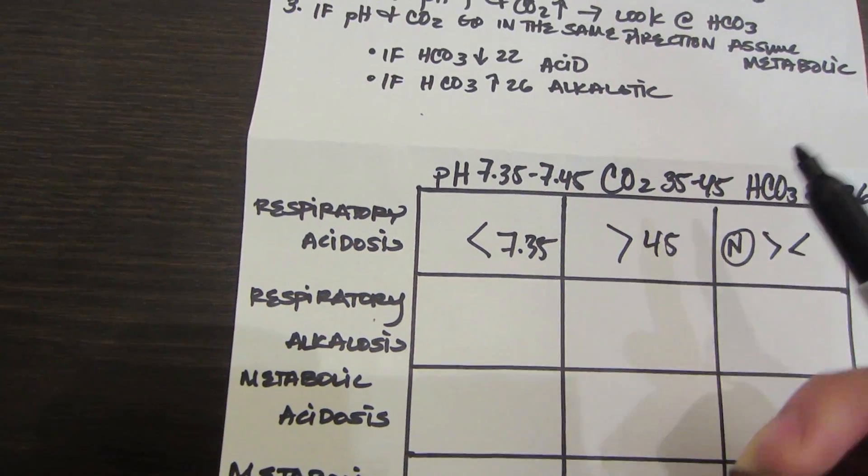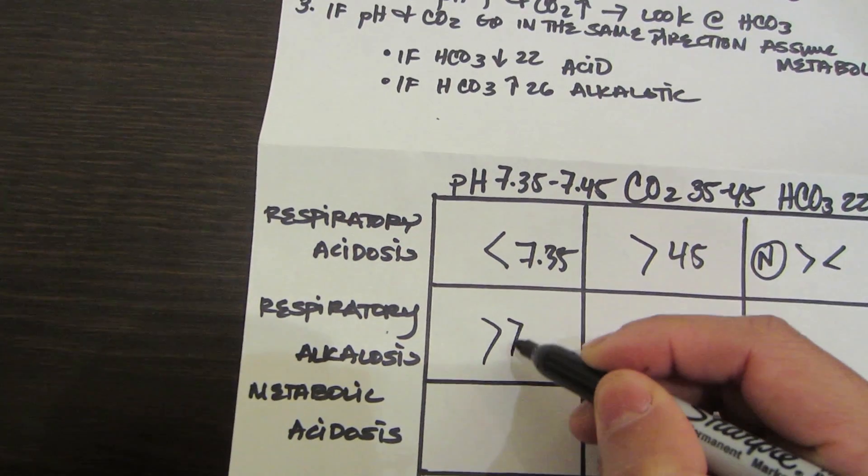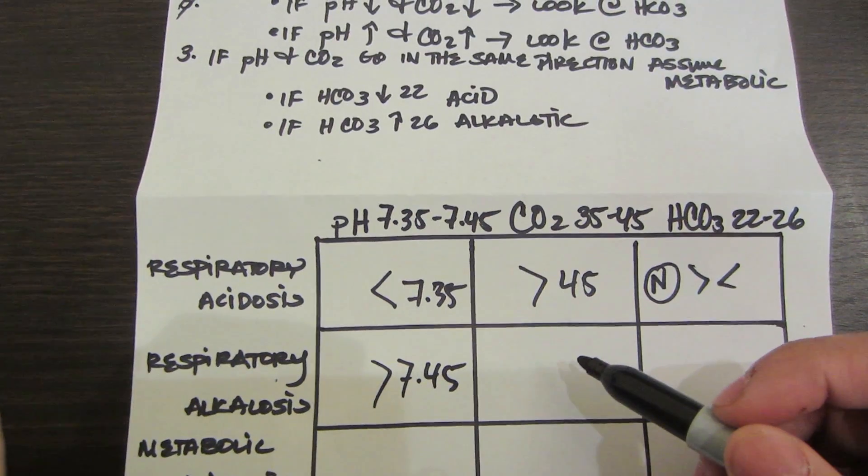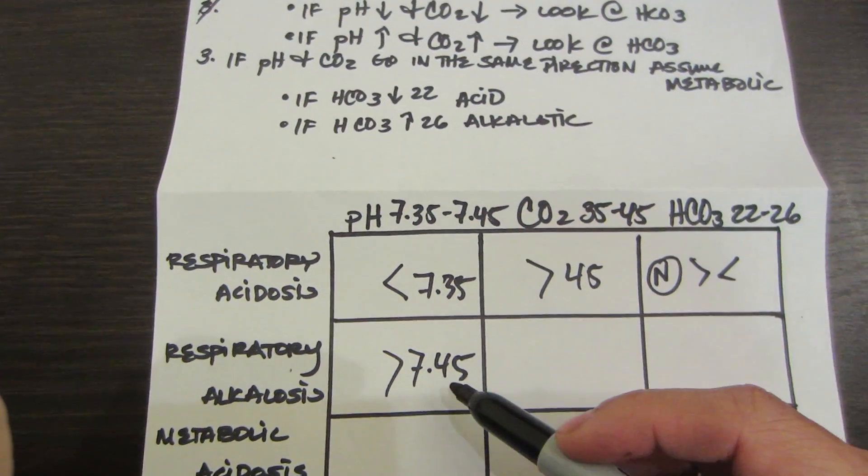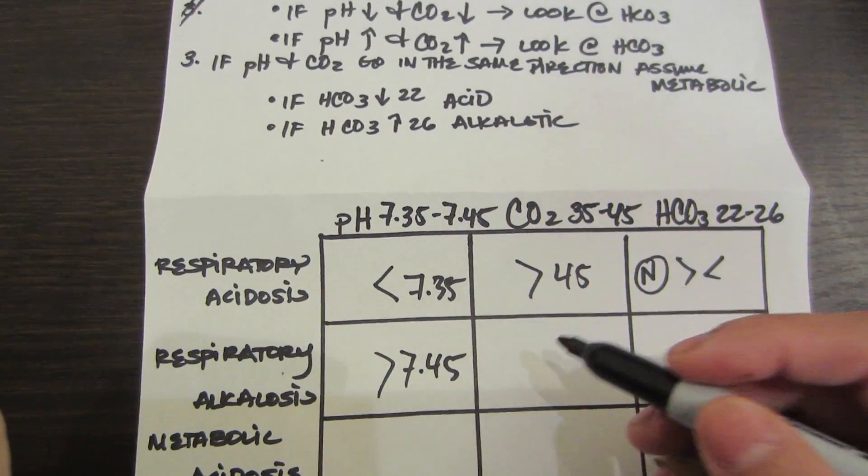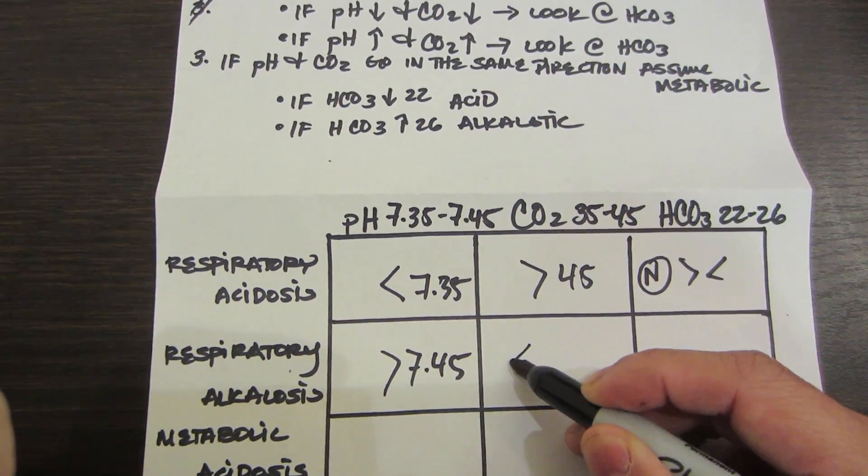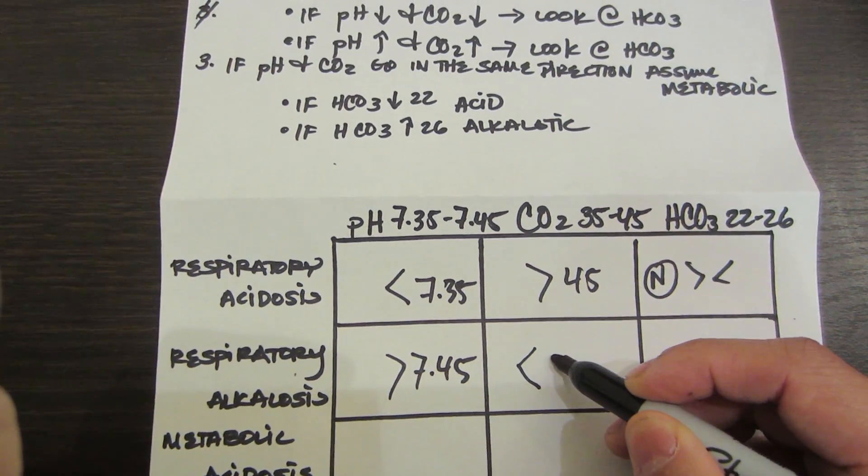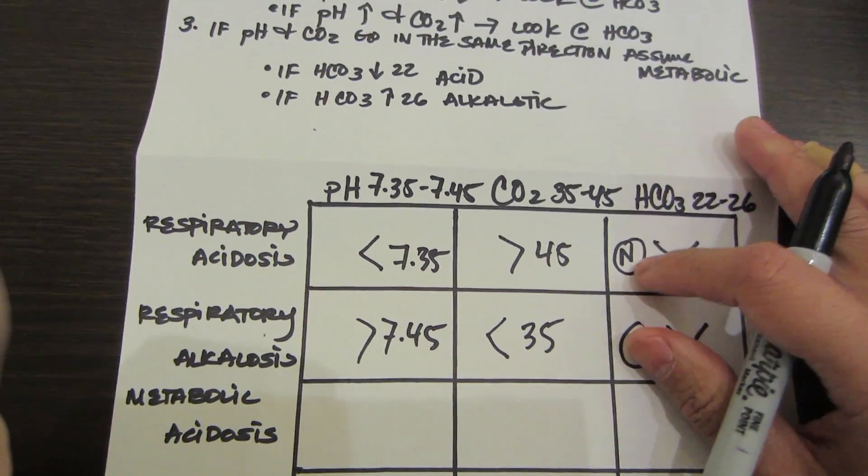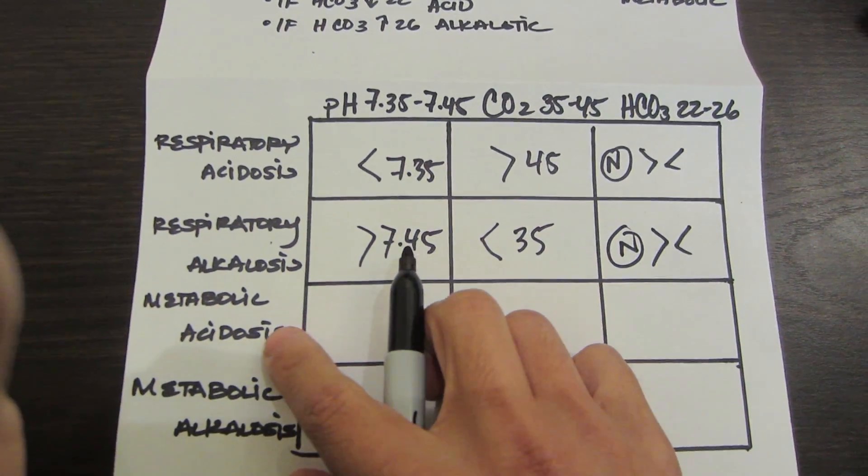Respiratory alkalosis: you always want to remember alka is higher, acid is lower. Greater than 7.45. Since it is respiratory based, remember the CO2 is going to be opposite, so we're going to be less than 35. It could be normal. Don't mind the bicarb here, okay? We're only going to look at the bicarb when it's metabolic.